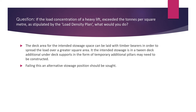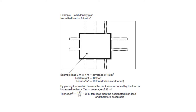Looking at the picture: in the center is a dark square representing the load. The ship's permitted load density plan was six tons per meter square, so no cargo could exceed six tons per meter square. In this example, the load dimensions are three meters by four meters, covering an area of 12 meter square. The weight of the cargo is 120 tons. Dividing 120 tons by 12 meter square gives 10 tons per meter square — but your permitted load is only six tons per meter square. The deck is overloaded.